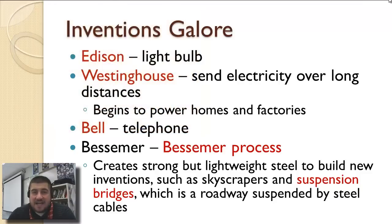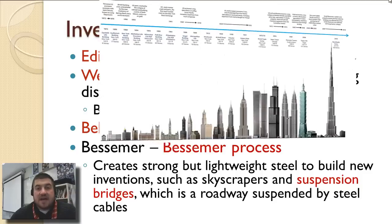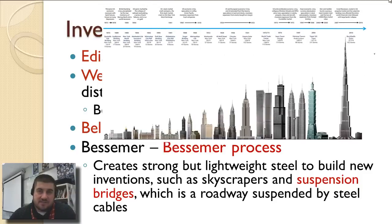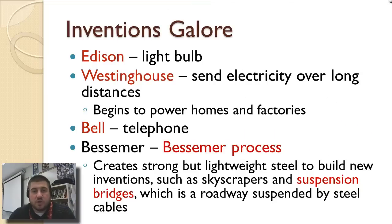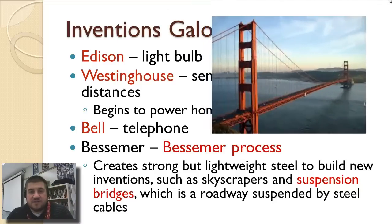Steel from the Bessemer process allows us to build new inventions like skyscrapers and suspension bridges. Before that, you couldn't build a building over about three stories because it wasn't strong enough. Now steel allows us to build skyscrapers and suspension bridges — like the Golden Gate Bridge, a roadway suspended by steel cables.